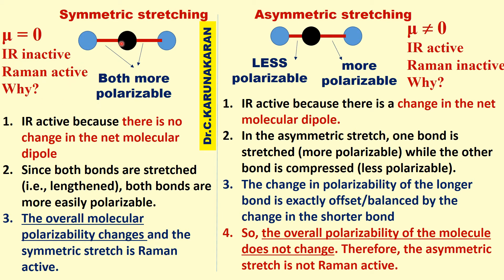For symmetric stretching of CO₂, both bonds are stretched or compressed equally. Therefore μ = 0 — there is no change in dipole moment, because plus-minus-plus-minus cancel. Therefore IR is inactive for symmetric stretching. For asymmetric stretching, one bond is compressed and one is elongated, so μ ≠ 0 — there is a change in net dipole moment. Therefore asymmetric stretching is IR active, whereas symmetric stretching is IR inactive.